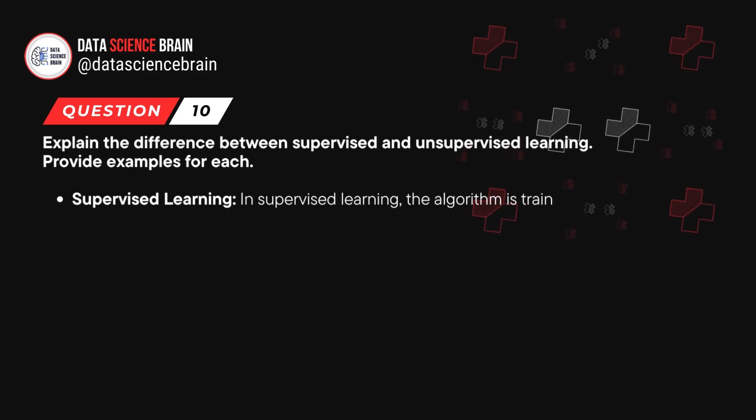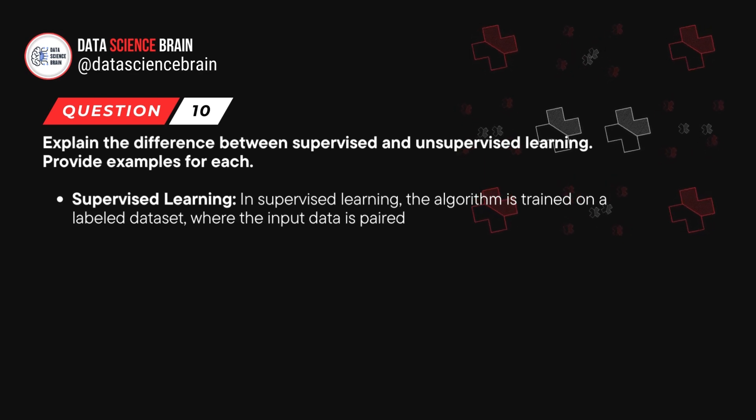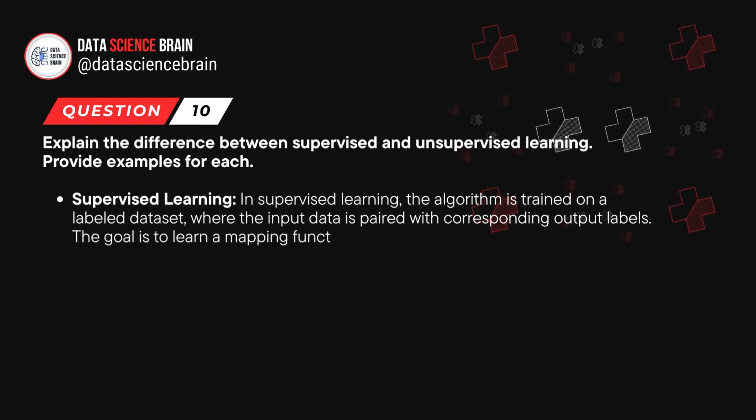In supervised learning, the algorithm is trained on a labeled dataset where the input data is paired with corresponding output labels. The goal here is to learn a mapping function from input to outputs.